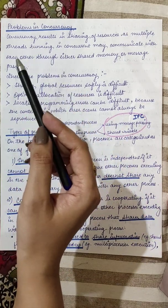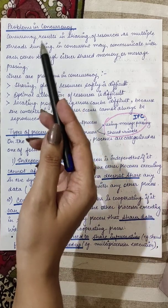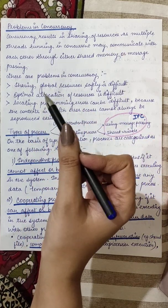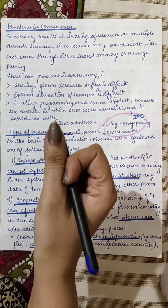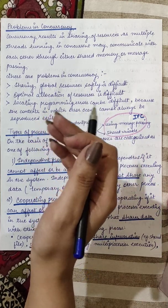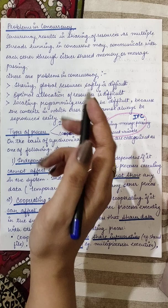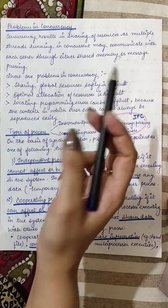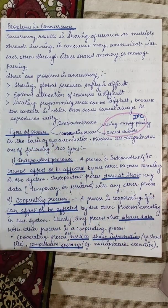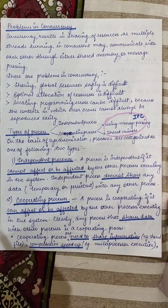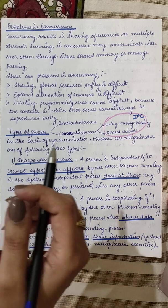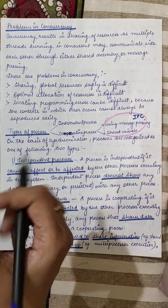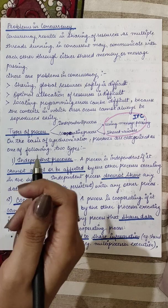So ab jab concurrency ki baat hum karti hain, it will result in the sharing of resources. Definitely jab resources share ho rahi hain, ek hi resource hai hamare paas, usi ko hume bahut sare processes mein share karana hai. Ab yeh share kis tarike se karte - ek process dusre process se communicate bhi karega. So shared memory ya message passing, yeh do humare inter-process communication ki techniques hain jisko hum use karte hain.